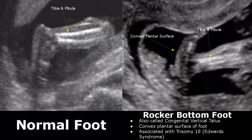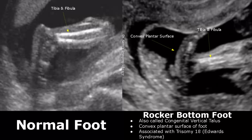Here is another image of a club foot where the abnormal angulation is more severe. Rocker bottom foot, also called congenital vertical talus, is a congenital anomaly in which there is a convex plantar surface of the foot. It is associated with trisomy 18, that is Edwards syndrome.